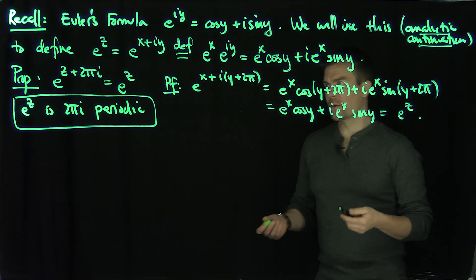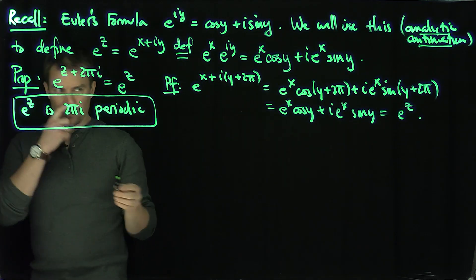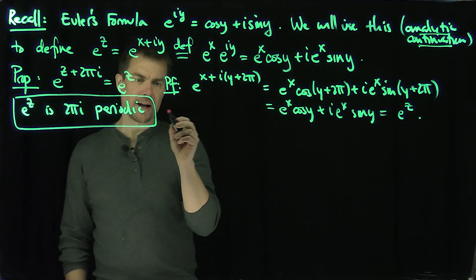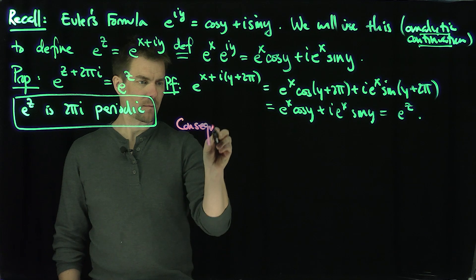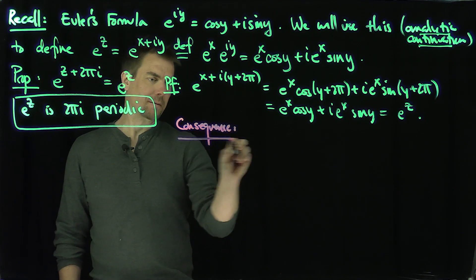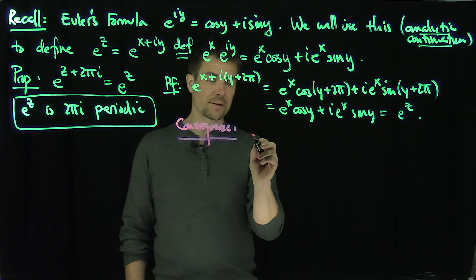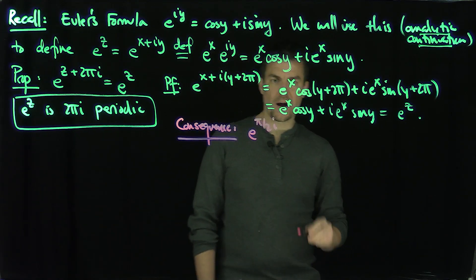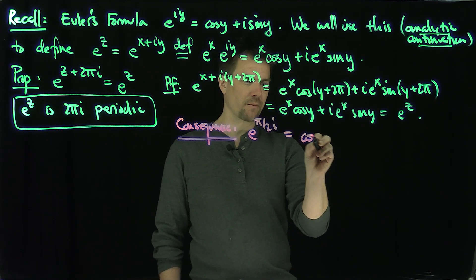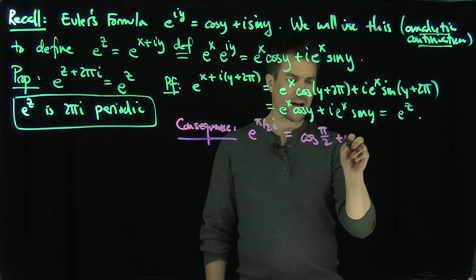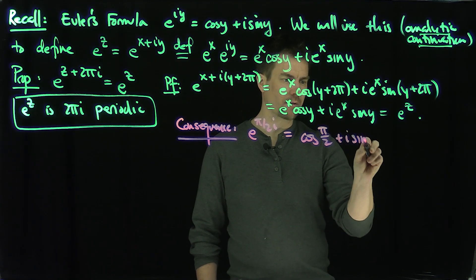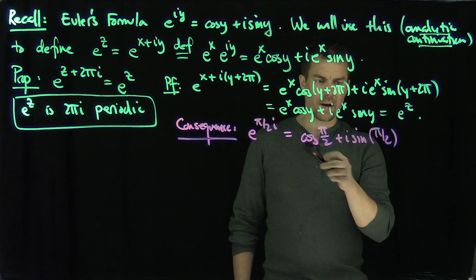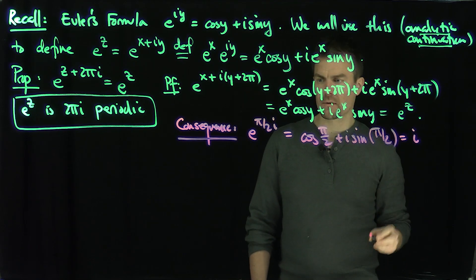Now what can we do from this? We get one of these beautiful results you see on math cups or posters. What's a consequence? The immediate consequence: e^(πi/2). What's e^(πi/2)? That's going to be cosine of π/2 plus i times sine of π/2. x equals 0, so cosine of π/2 is equal to 0 and sine of π/2 is equal to 1, so this is just equal to i.